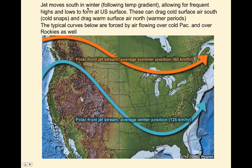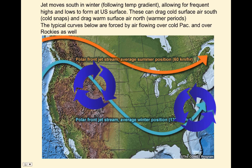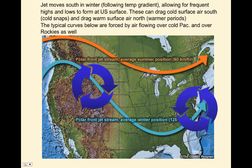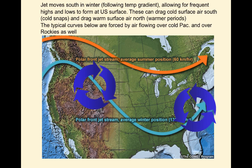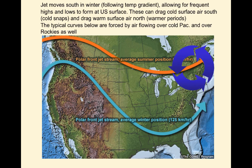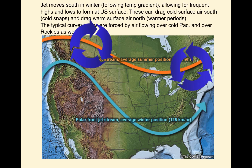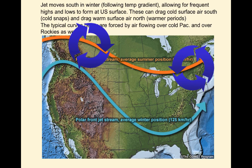The jet moves south in winter following the maximum temperature gradient. The temperature gradient in the winter is pretty strong, so the jet stream is pretty strong as a result. As it has some curvature in it, you can generate highs and lows at the surface. These will drag cold surface air south and drag warm surface air north, causing frontal precipitation in these zones. When it moves to the north following the temperature gradient in the summer, you'll get your maximum frontal precipitation leaving the center of the U.S. and heading to the border or even into Canada.